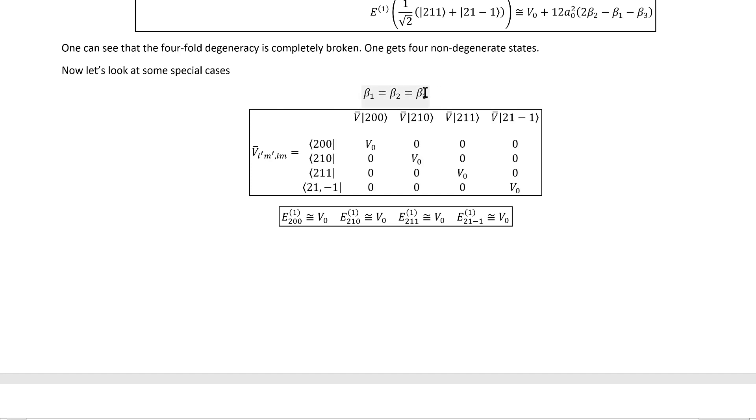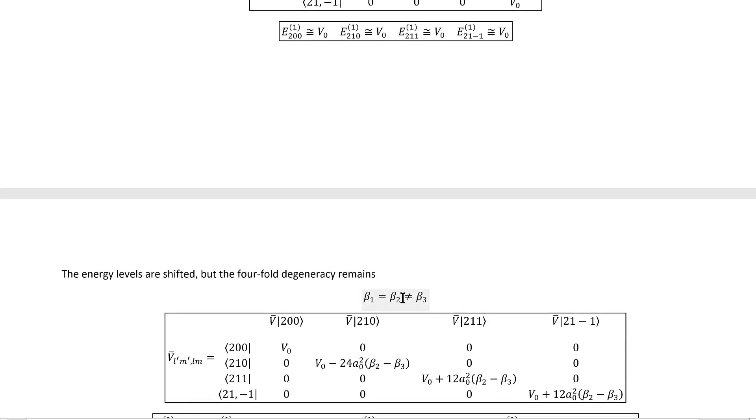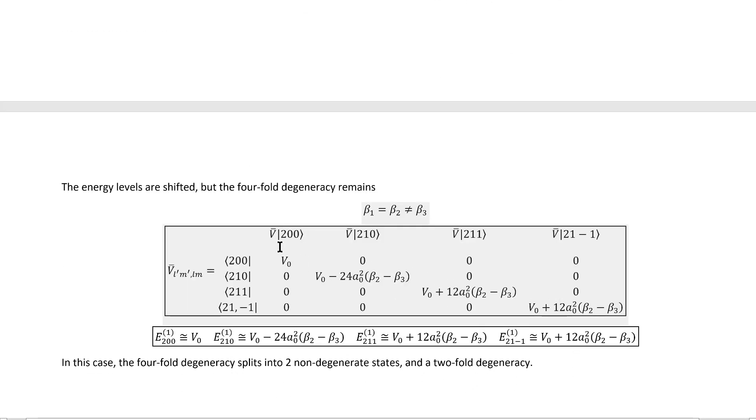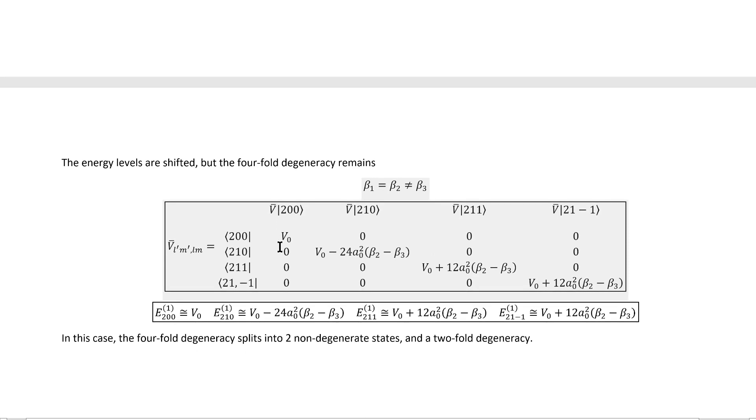However, if we relax this condition a little bit like this, we again find that the matrix is immediately diagonal, but we don't find that the degeneracy is completely preserved. In this case, the fourfold degeneracy splits into two non-degenerate states and a twofold degeneracy down here.